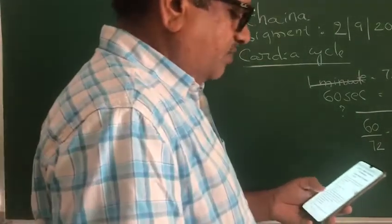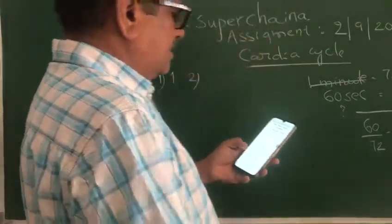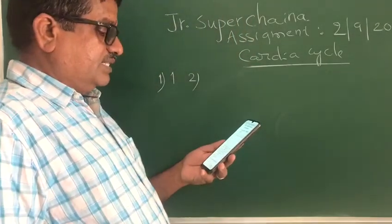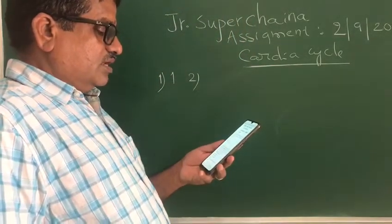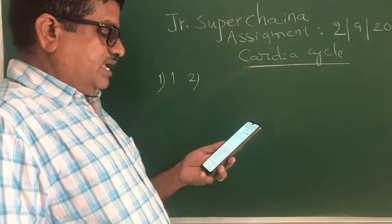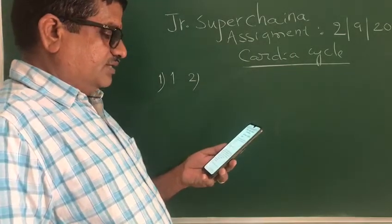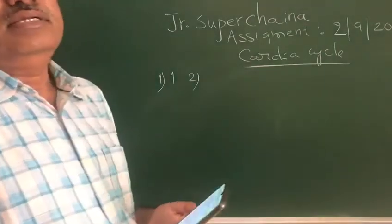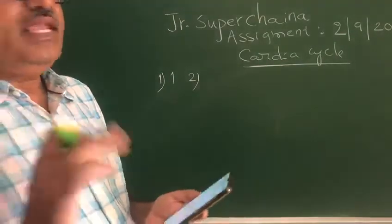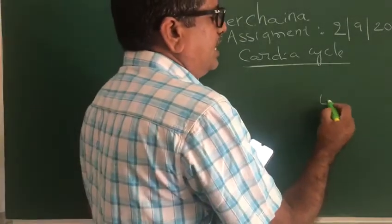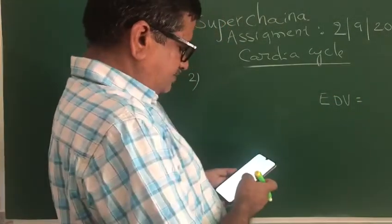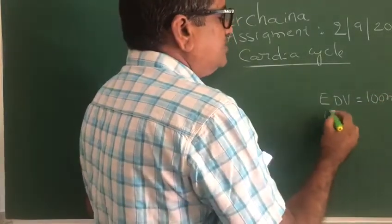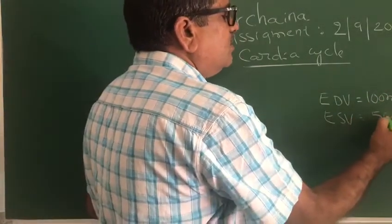Question two: what would be the heart rate of a person if the cardiac output is 5 liters, the blood volume in the ventricle at the end of diastole is 100 ml, and at the end of systole is 50 ml? End-diastolic volume is 100 ml, end-systolic volume is 50 ml.